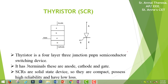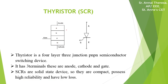As you know already, thyristor is a four layer device. The layers are P, N, P, N. Four layers are there and three junctions — junction 1, junction 2, and junction 3.